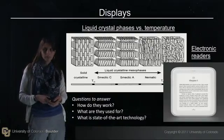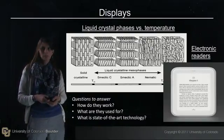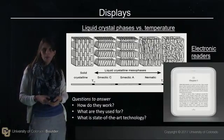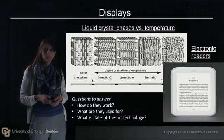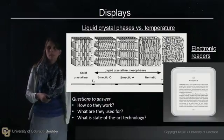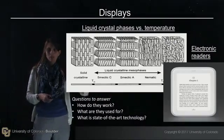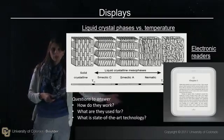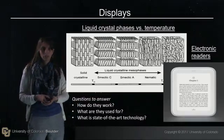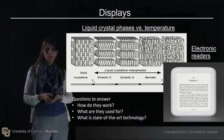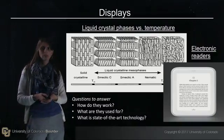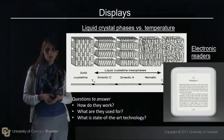Finally, we'll talk about displays. Here I'm showing you two examples of common displays. One is based on liquid crystals — a liquid crystal is somewhere between a liquid and a crystal, and you reach this phase by looking at the transition between solid crystalline material and true liquid form. We'll also examine another technology used for electronic readers called e-ink. We'll talk about how these technologies and others work and what they're used for.